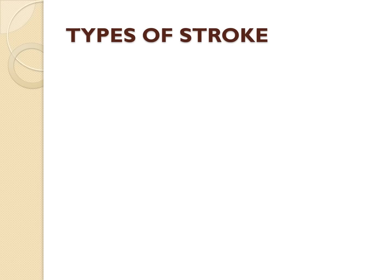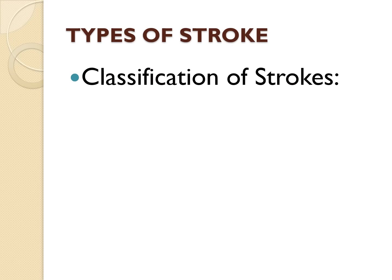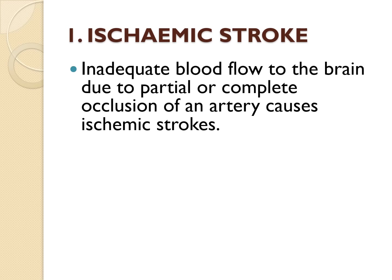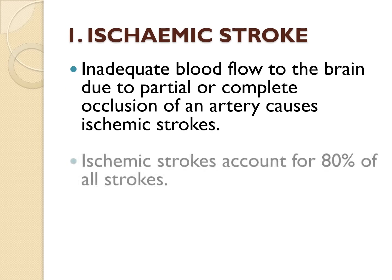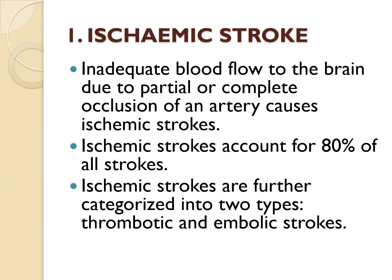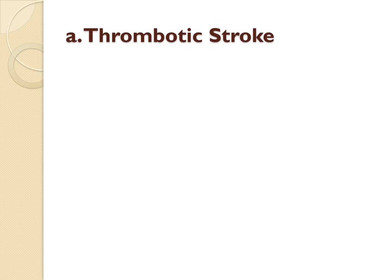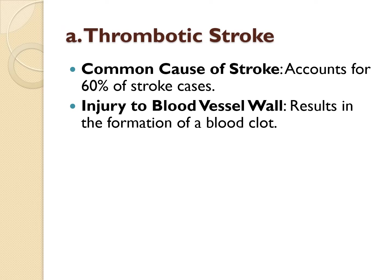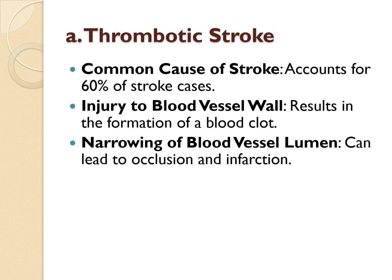Let's now discuss the types of stroke. Stroke is classified as ischemic or hemorrhagic depending on underlying pathophysiologic findings. Ischemic stroke results from inadequate blood flow to the brain from partial or complete occlusion of an artery, accounting for 80% of all strokes. Ischemic strokes are further divided into thrombotic and embolic strokes. Thrombotic stroke is the most common cause at 60%, occurring from injury to blood vessel walls and formation of a blood clot. The lumen of the blood vessel becomes narrowed and if occluded, infarction occurs.